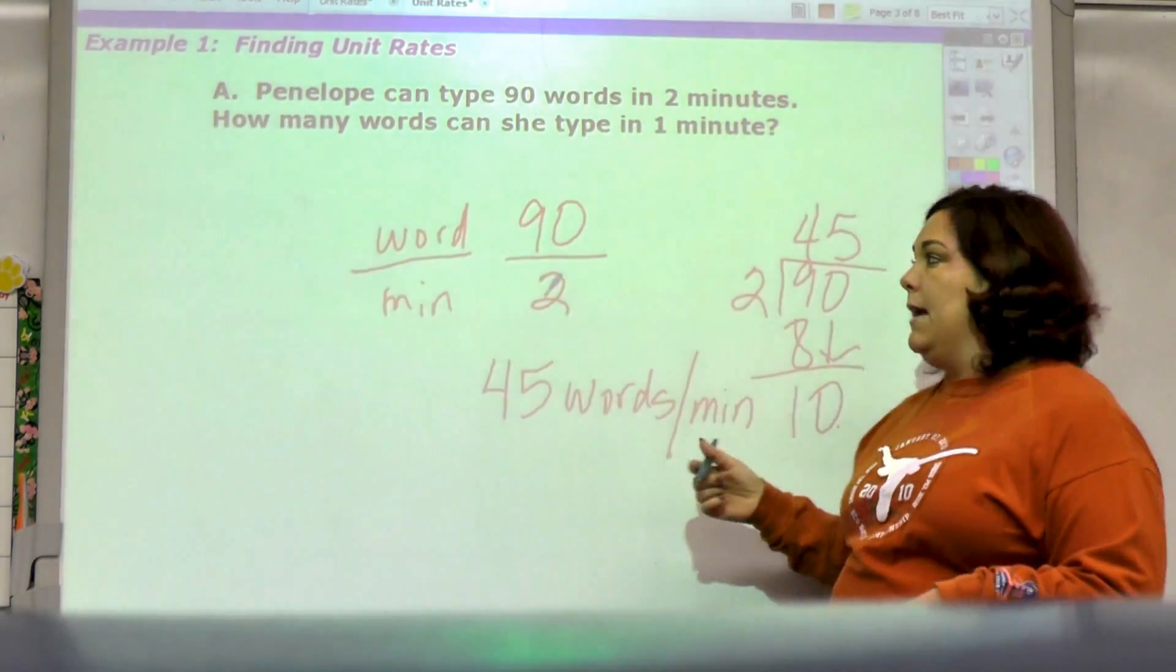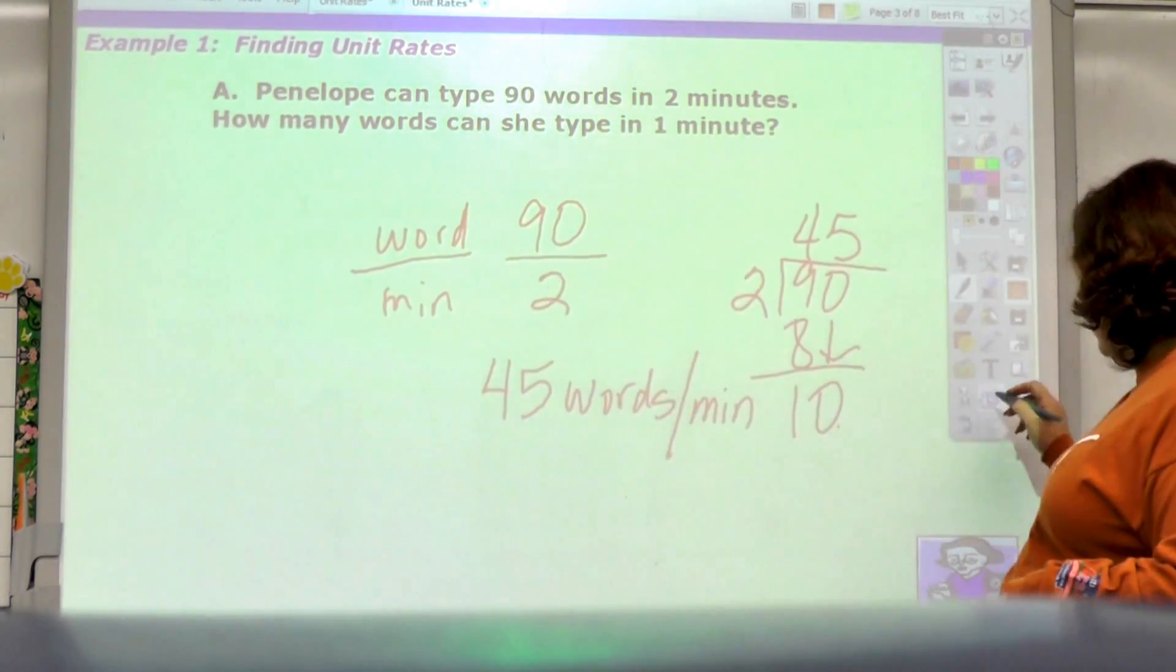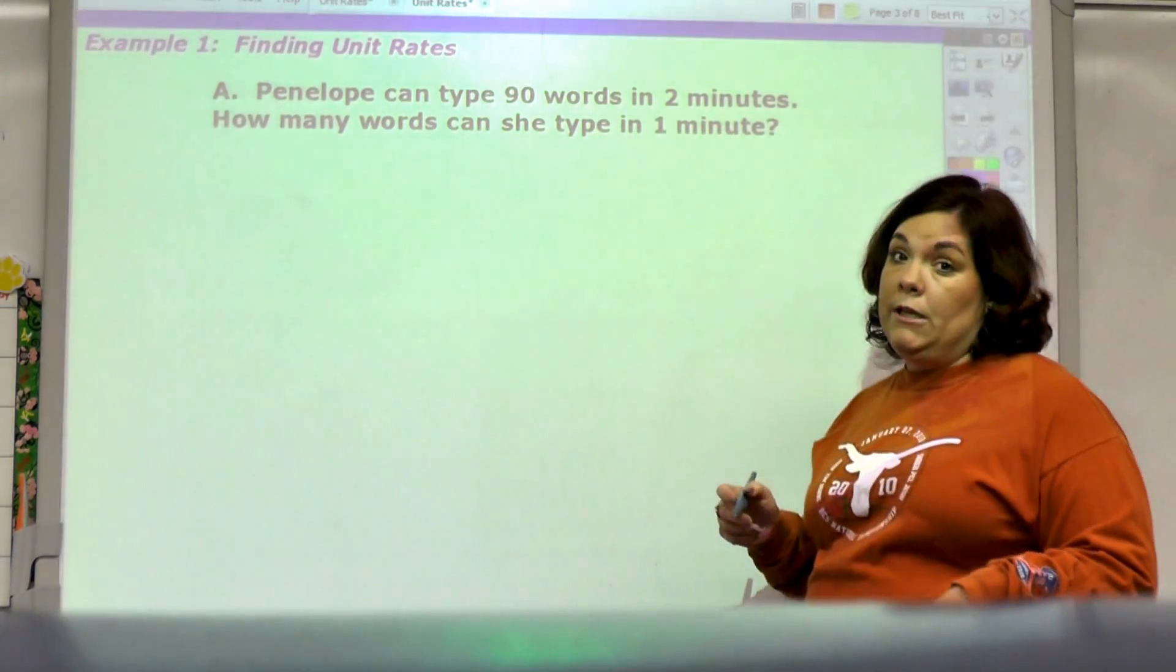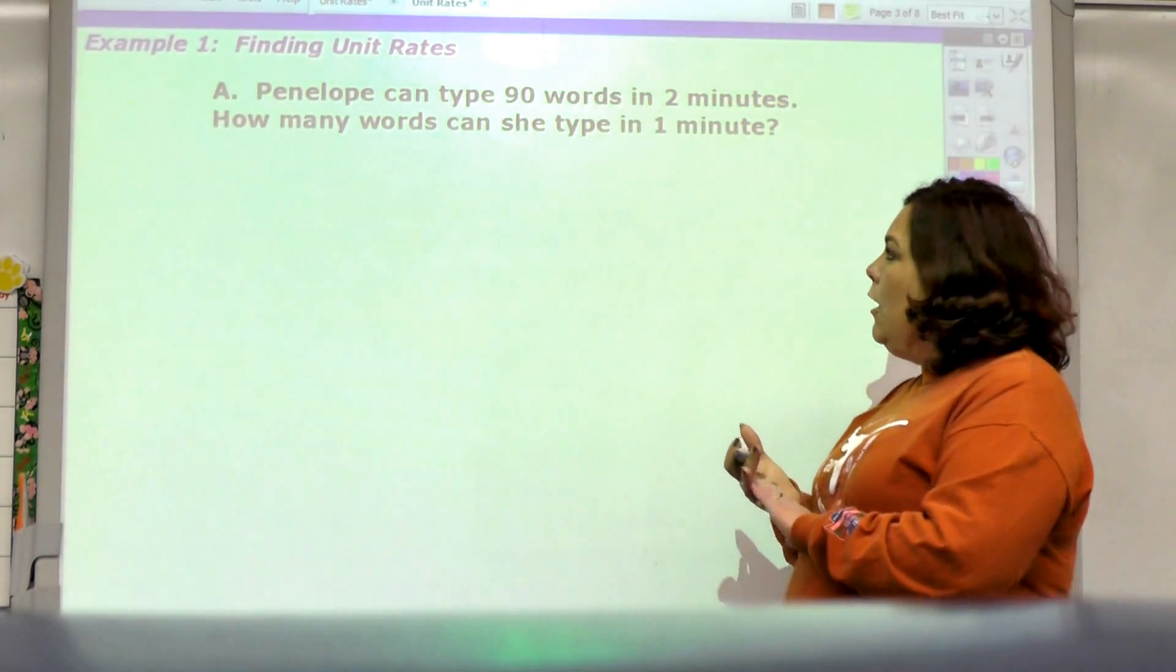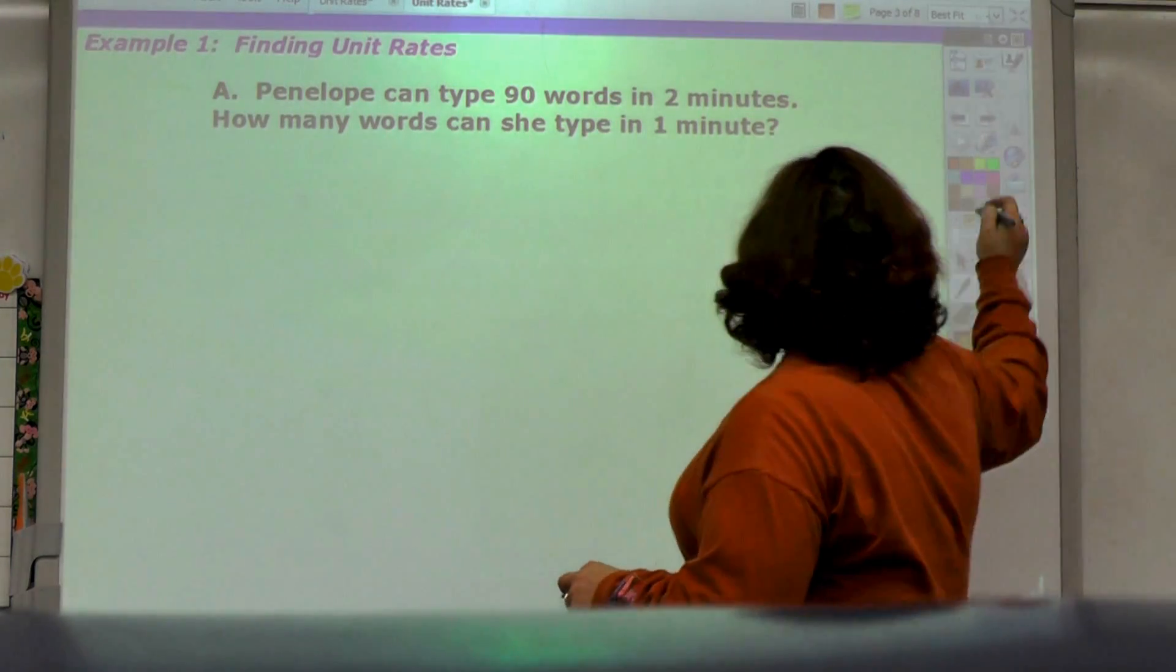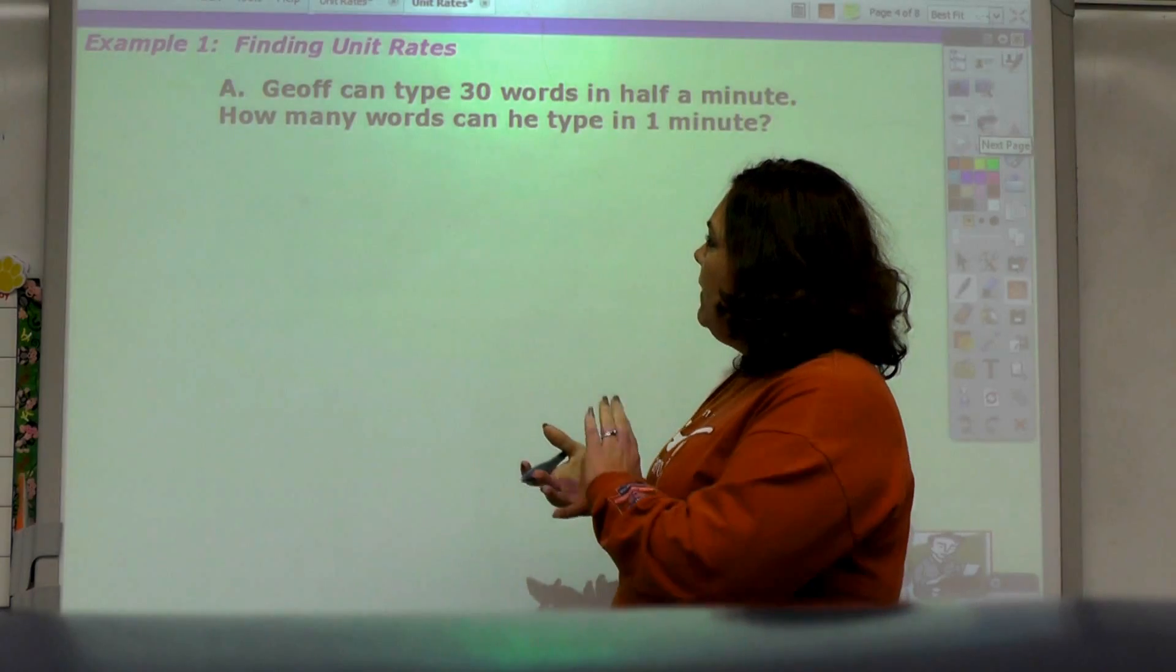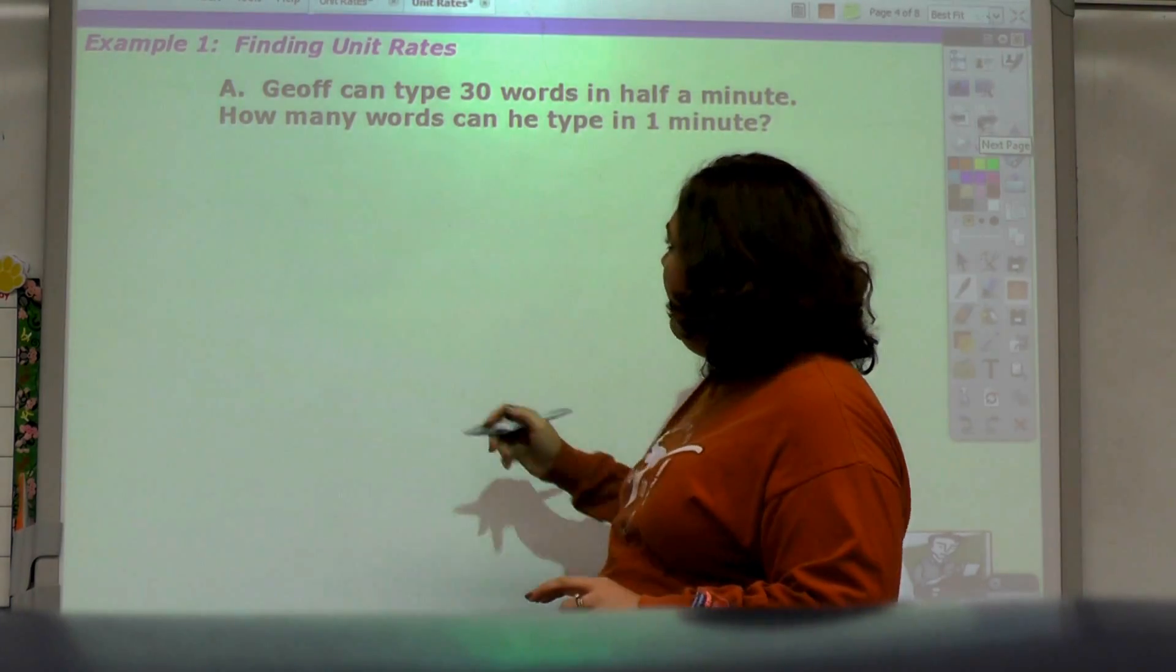It's real easy whenever you have a whole number and you're dividing to find out what the unit rate is. Just remember this line means divide by, so with unit rates we're going to be doing a lot of dividing. Let's look at this one, it works in a different way.